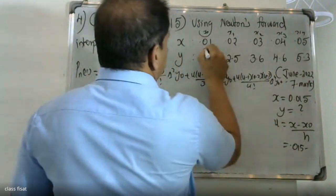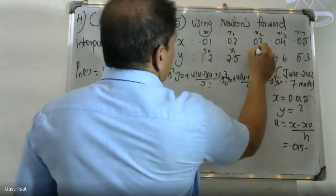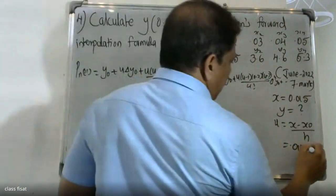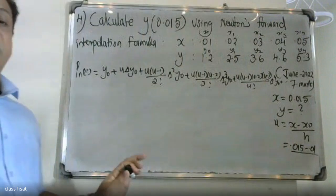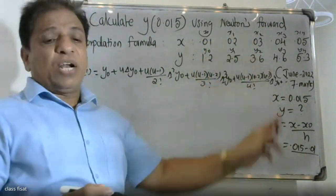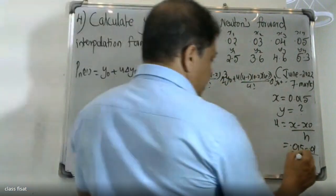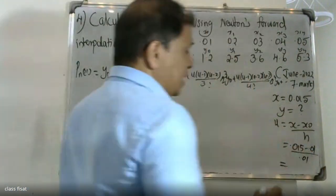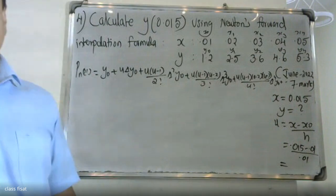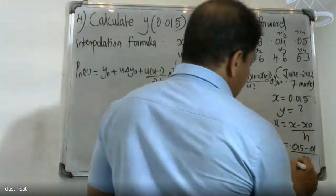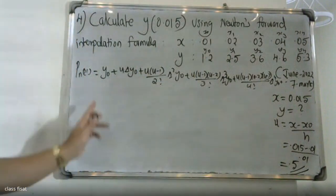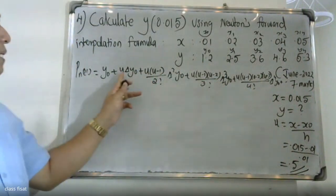Here x naught = 0.01, h is the interval difference = 0.01. So u = (x − x0)/h = (0.015 − 0.01)/0.01 = 0.5. We will now build the forward difference table using the given y values.